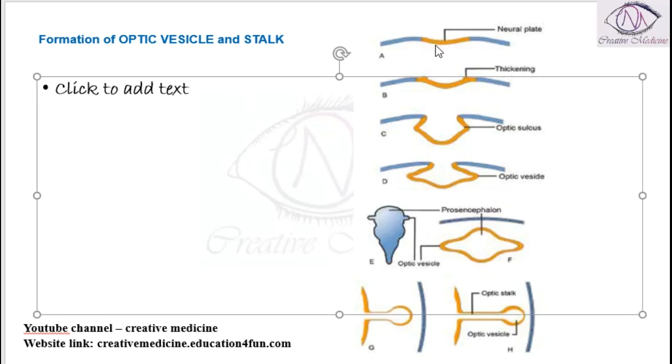These thickenings will invaginate, leading to the formation of sulcus. They will invaginate like this, leading to the formation of optic sulcus. This optic sulcus on both sides results in formation of vesicles.